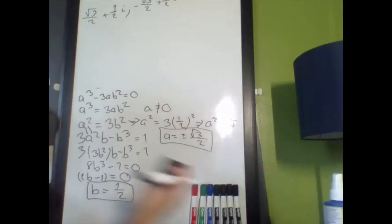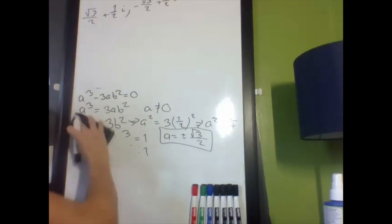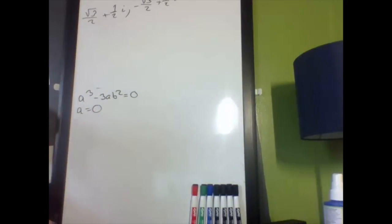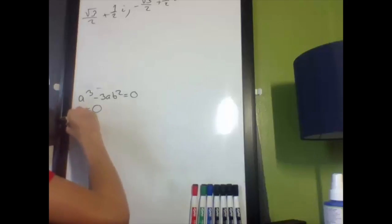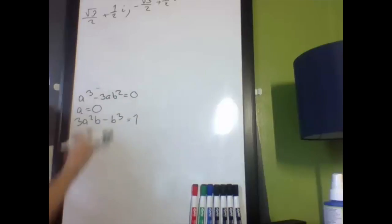Now, we're going to have a third solution, which I'll get by setting a equal to 0, and you can see it's obviously going to be a solution. The equation we had before was 3a squared b minus b cubed equals 1. What's a equal to? 0. So get rid of that. And then I get negative b cubed equals 1, b cubed equals negative 1.